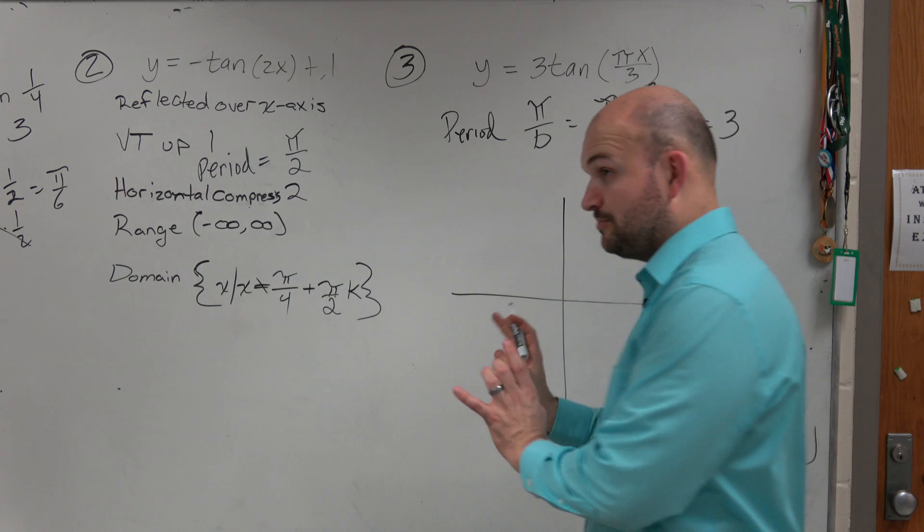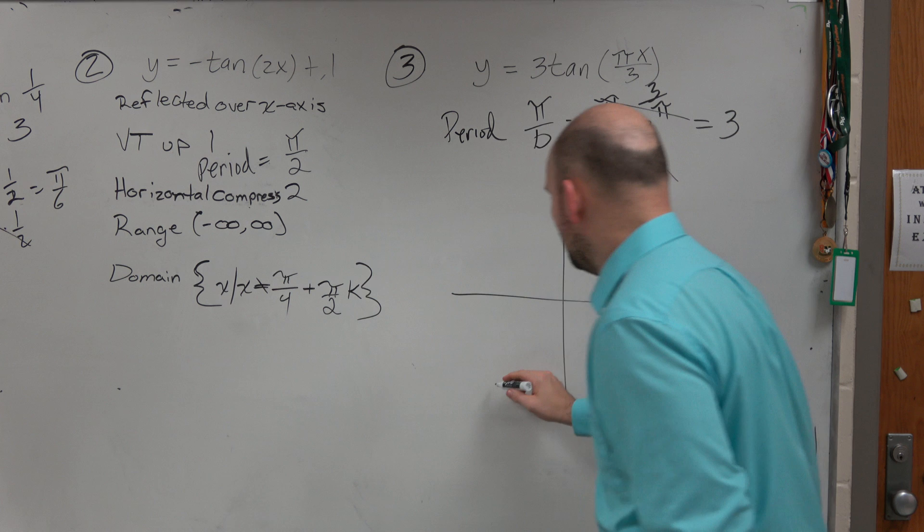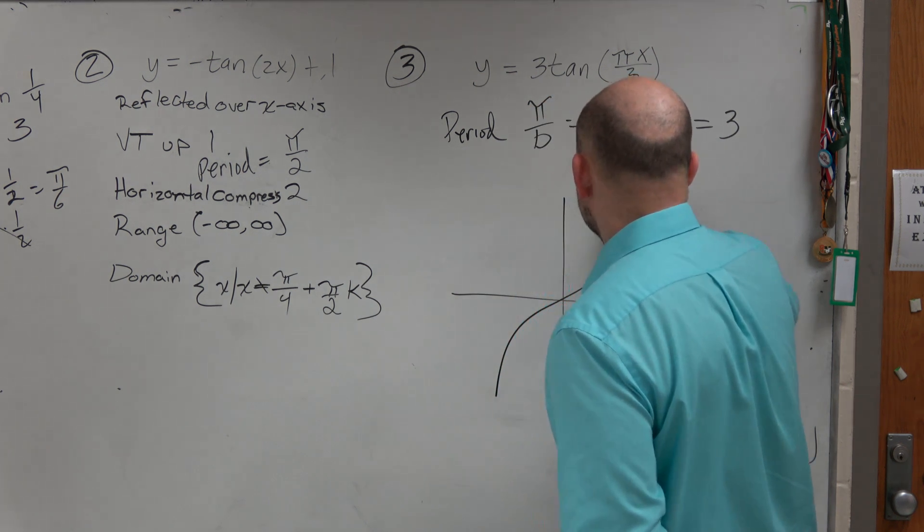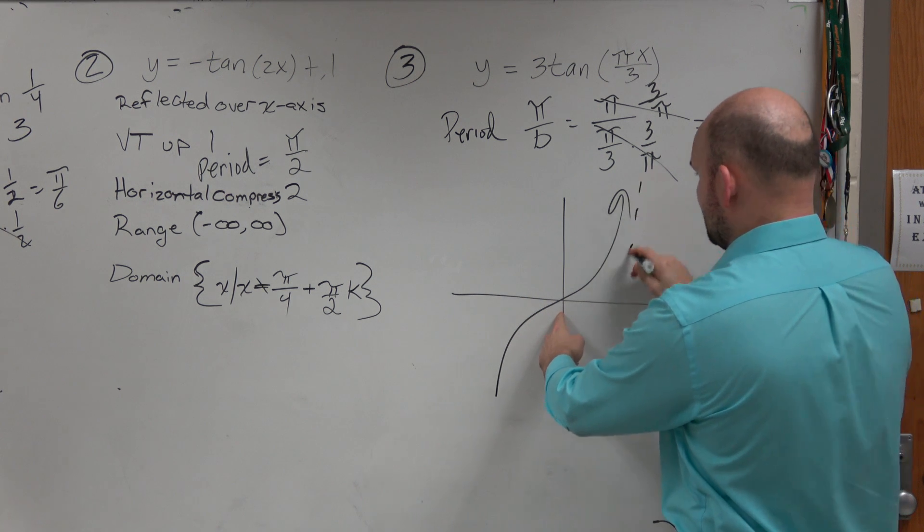Now remember, the initial period. We're not doing any shifts left or right right now. If we just graph the initial period, we know the graph looks like this. We know the period is 3. So then where should this first asymptote be at?